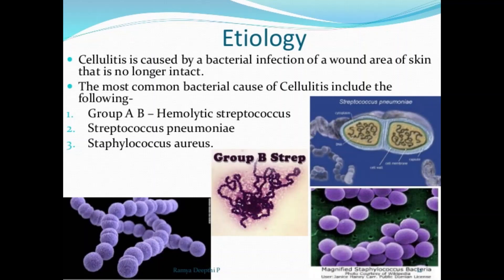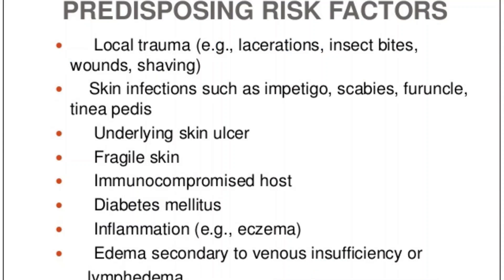There are several factors that put you at increased risk of cellulitis. These include injury — any cut, fracture, burn, or scrape gives bacteria an entry point. A weakened immune system is also a risk factor; conditions that weaken your immune system such as diabetes, leukemia, and HIV/AIDS leave you more susceptible to infections. Certain medications can also weaken your immune system.